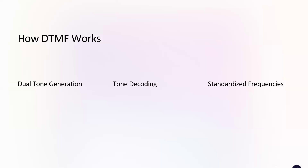Next is tone decoding. On the receiving end, the DTMF receiver detects the unique tone pair and associates it with a specific digit or character. The interpretation of digits is done based on the pair of frequencies used. This allows the phone system to interpret the input and execute the corresponding actions, like routing a call or triggering an automated response.